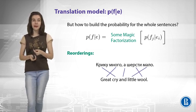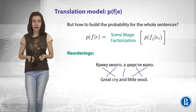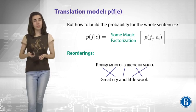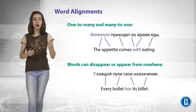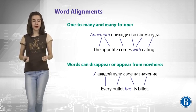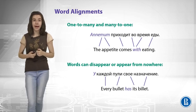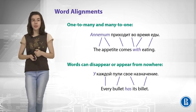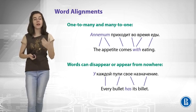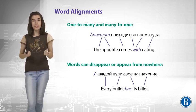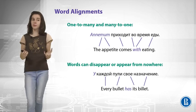So, the problem is that we can have some reorderings in the language, like here. Or, even worse, we can have some one-to-many or many-to-one correspondence. For example, the word аппетит here corresponds to the appetite, and the word with here corresponds to two Russian words во время. It means that we need some model to build those alignments.